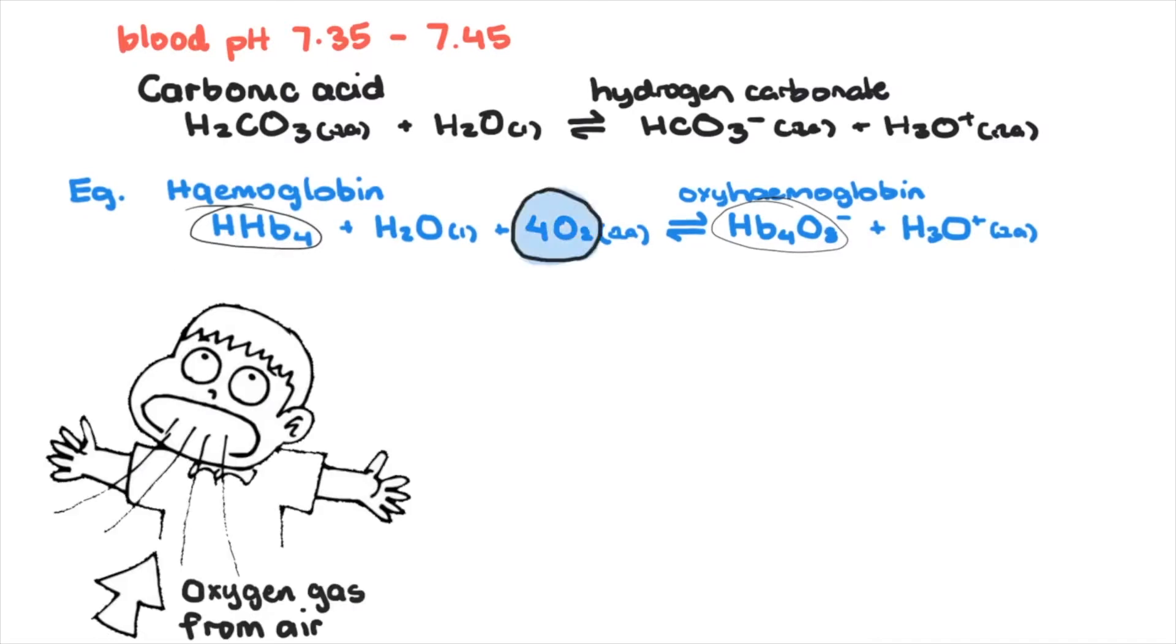As you inhale, more oxygen is added to this reaction, favoring the forward direction according to Le Chatelier's principle. This results in an increase in hydronium ion concentration, so blood becomes acidic. The hydrogen carbonate buffer kicks in and reduces the added hydronium ion, effectively maintaining a stable pH.